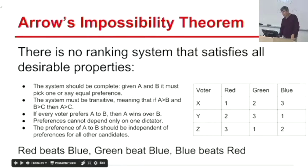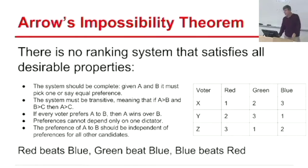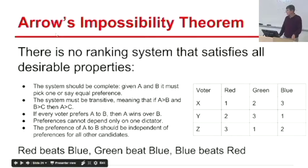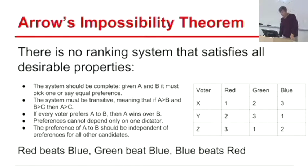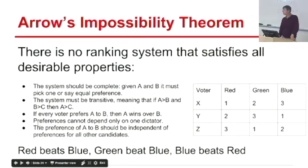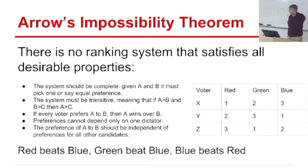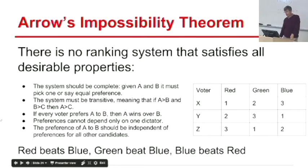There are several different ways to do rankings. Which is the best? We could use Elo, digraph methods, or many others. The interesting thing is there's a theoretical argument that there is no single best way to rank things. This is Arrow's Impossibility Theorem from political science, which says it's impossible to design an election system satisfying all natural properties simultaneously — like transitivity: if A is preferred to B and B to C, then A should be preferred to C.